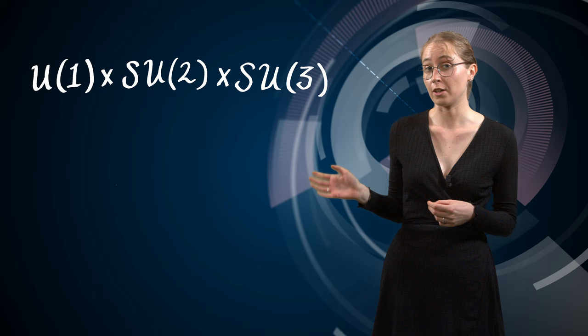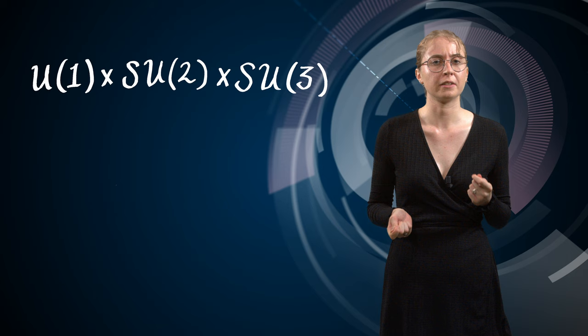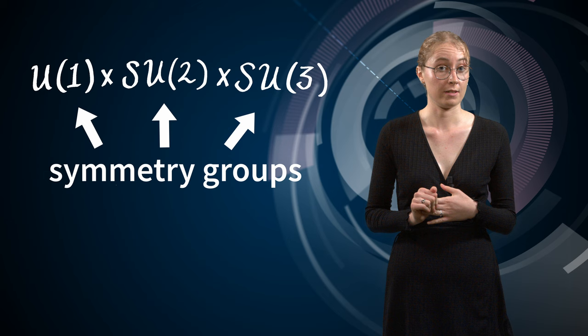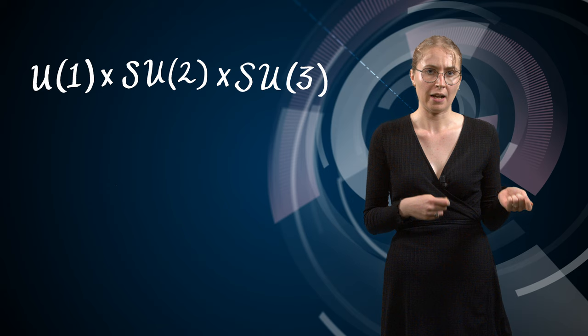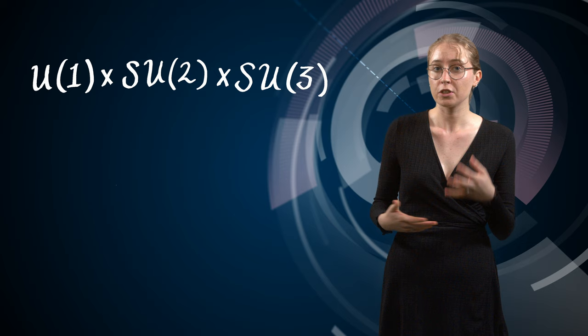With that, we're finally ready to take a shot at the enigmatic expression: U(1) cross SU(2) cross SU(3). This expression is actually built with names of symmetry groups, just like the groups we looked at in this video. That's because the Standard Model is in fact a theory of a special type of symmetries, called gauge symmetries, which are related to the fundamental interactions between particles. And we know from Noether's theorem that these symmetries will have a corresponding conserved physical quantity.